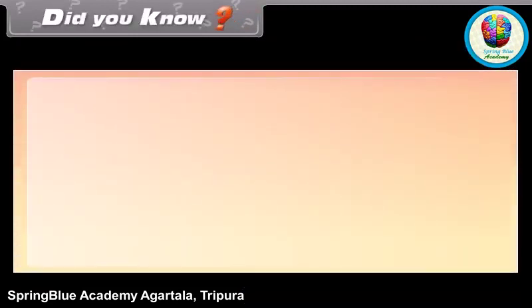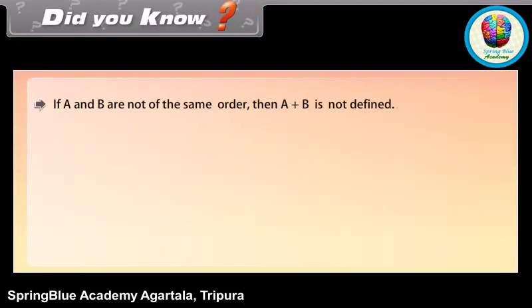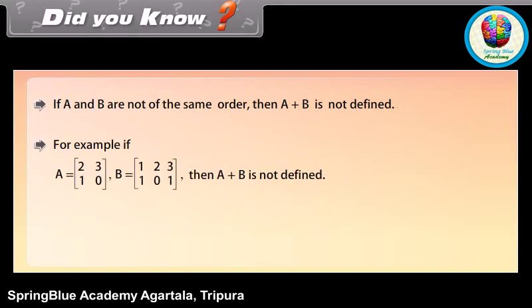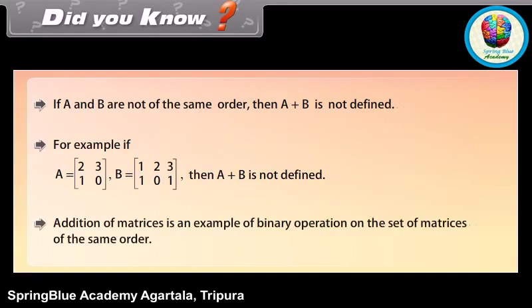Did you know? If A and B are not of the same order, then A plus B is not defined. For example, if A is the 2 by 2 matrix with rows [2, 3] and [1, 0], and B is the 2 by 3 matrix with rows [1, 2, 3] and [1, 0, 1], then A plus B is not defined. Addition of matrices is an example of a binary operation on the set of matrices of the same order.